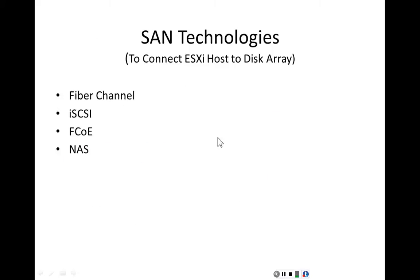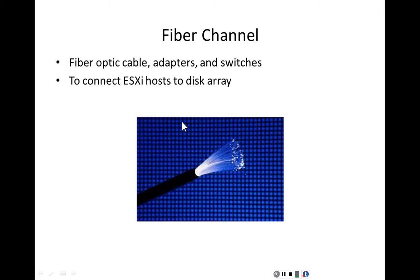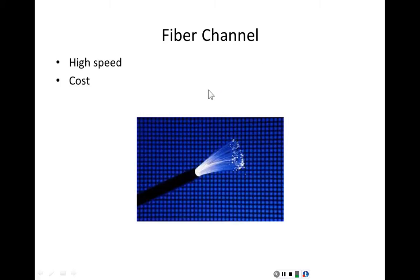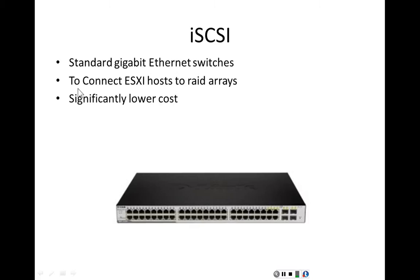There are different SAN technologies: fiber channel, iSCSI, fiber channel over Ethernet, and network attached storage. Fiber channel uses fiber optic cable, fiber optic adapters, and fiber optic switches to connect the ESXi host to the disk array. It is fast — 16 gigabits per second — but expensive: $1,000 for one controller card, $5,000 to $10,000 for a small switch. Conversely, iSCSI uses standard gigabit Ethernet switches at significantly lower cost — around $50 for a controller card — though it's slower at only 1 gigabit per second.